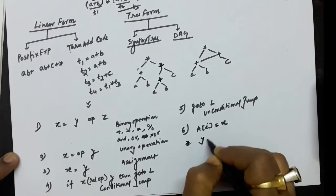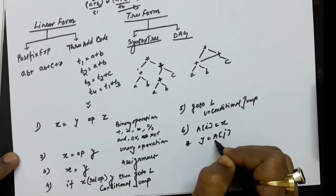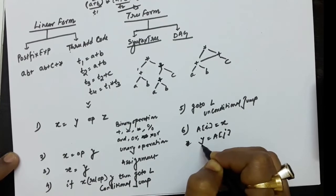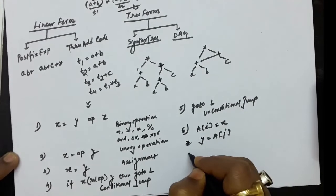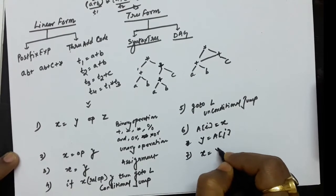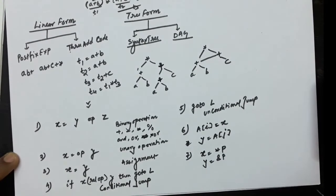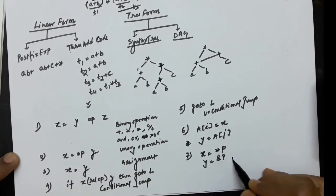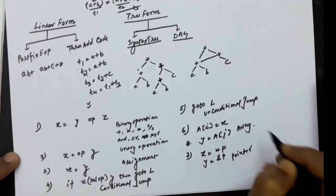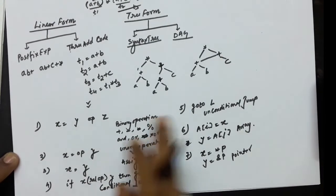Similarly, y = a[j] stores the value at the j-th index of array a into y — the three addresses here are y, a, and j. Finally, pointer operations such as x = *p or y = &p are also a type of three-address code statement. These are the various statement forms used in three-address code, which we will use repeatedly to represent different kinds of code.